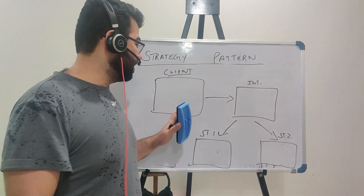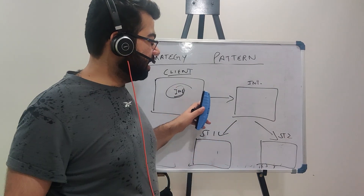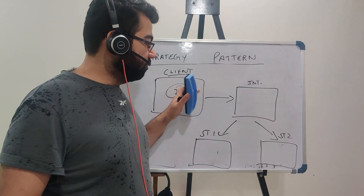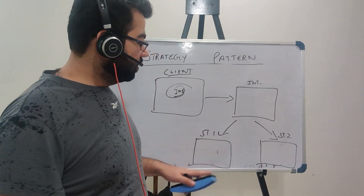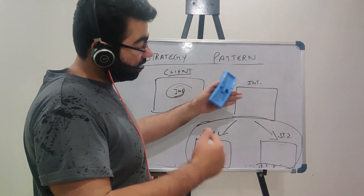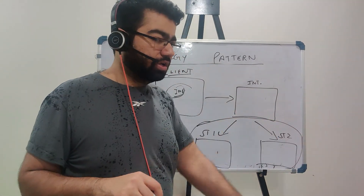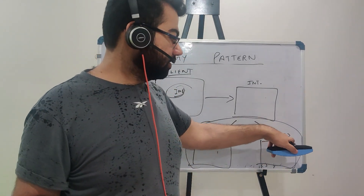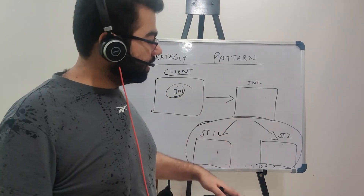Now let's look at the UML diagram of this strategy pattern. We have a client which has a method to implement, and it simply holds an interface — an interface for various different strategies. This is a class of different algorithms which can be called by the client and plugged in at the time of class creation by simply instantiating with a new strategy type. We don't have to duplicate or rewrite code — we just create the functionality by instantiating these classes.